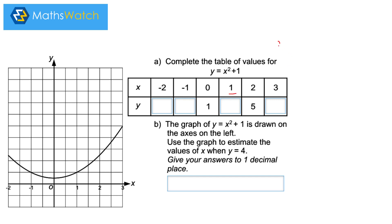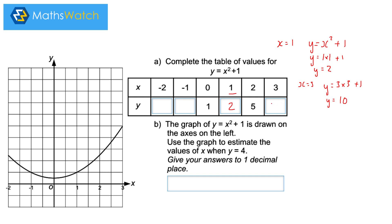Let's start with x equals 1, substituting into y equals x squared plus 1. We let x equal 1, and squaring is the same as multiplying the number by itself, so that's 1 times 1 plus 1, which equals 2. For x equals 3, y equals 3 times 3 plus 1 — 3 times 3 is 9, plus 1 is 10. So y equals 10.